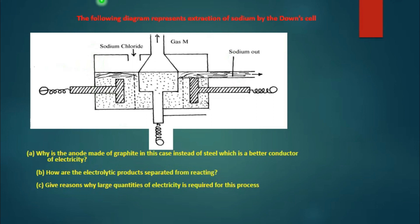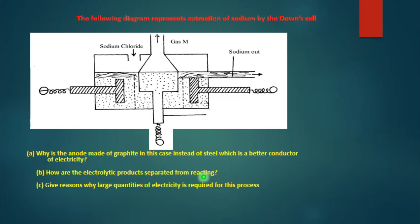That is the end of our lesson on extraction of sodium. Here is a sample quiz: study the diagram of the Down cell below and answer the following questions — why is the anode made of graphite instead of steel, which is a better conductor of electricity? How are the electrolytic products separated from reacting? Give reasons why large quantities of electricity are required for this process. Thank you for your time — for more videos please follow us.